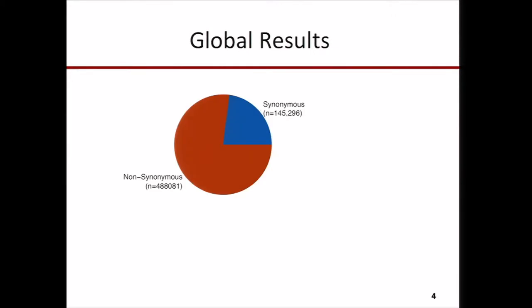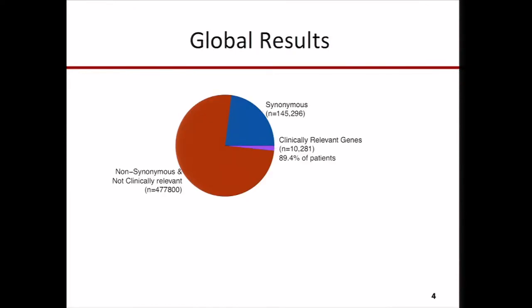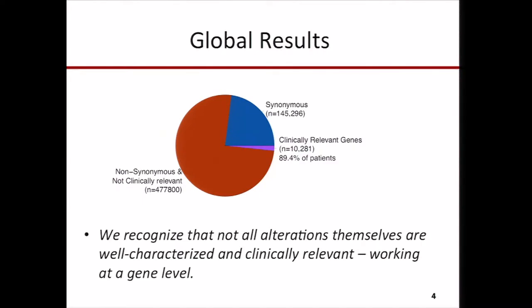Among these 12 tumor types, we identified over 600,000 mutations or short insertion deletions, of which a little less than 500,000 were non-synonymous. Of these non-synonymous mutations, over 10,000 alterations occurred in clinically relevant cancer genes in about 90% of the patients. We recognize that not all alterations are drivers or known to be clinically relevant, but we want to highlight them to promote further study and better place them in a clinical context.